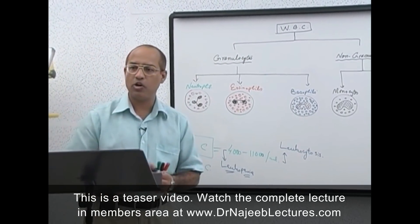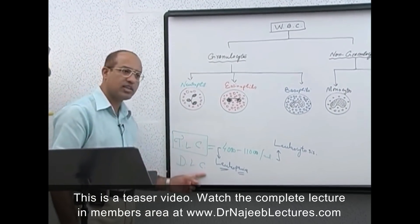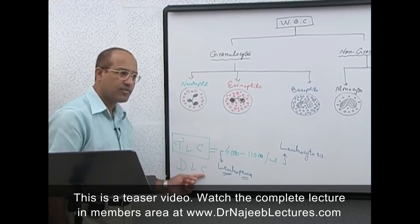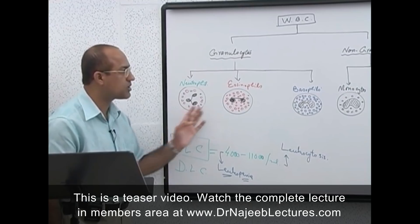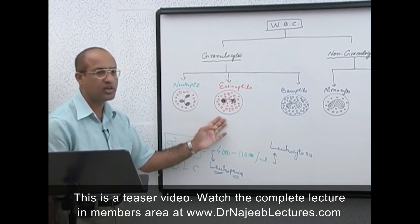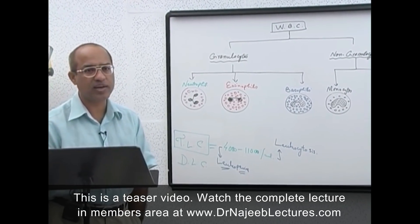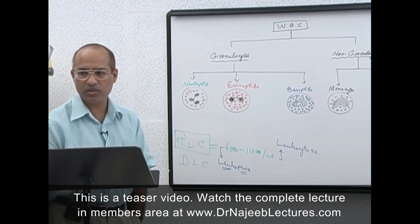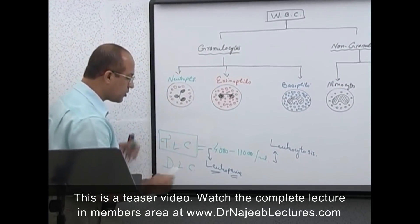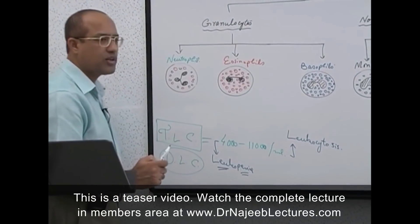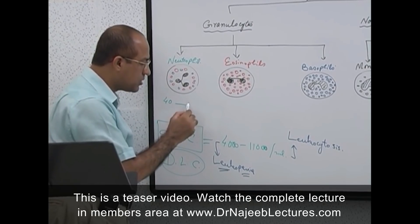When we talk about DLC — Differential Leukocyte Count — we are talking about out of 100 white cells, what is the percentage of neutrophils, what is the percentage of eosinophils, and so forth. The most abundant white cells are neutrophils.